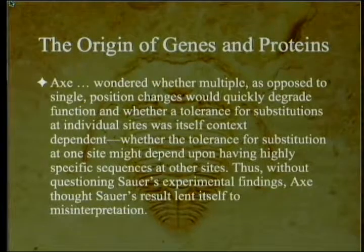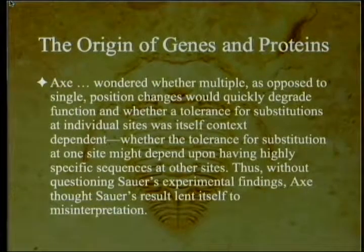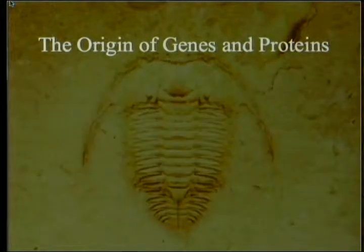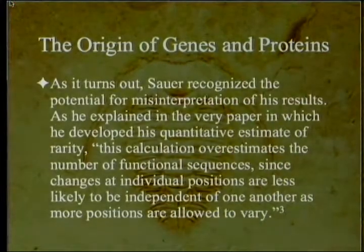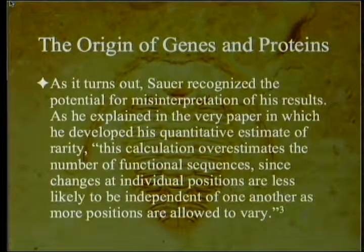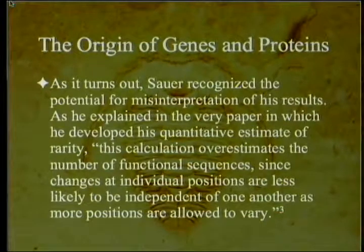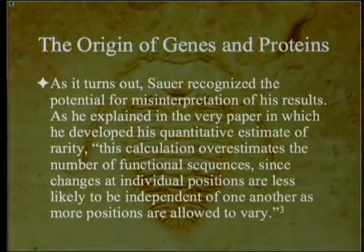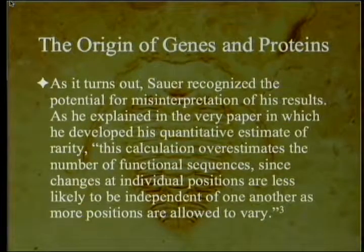Axe thought Sauer's results lent themselves to misinterpretation due to these competing errors. As it turns out, Sauer himself recognized the potential for misinterpretation in his paper, explaining that the calculation overestimates the number of functional sequences, since changes at individual positions are less likely to be independent of one another as more positions are allowed to vary.